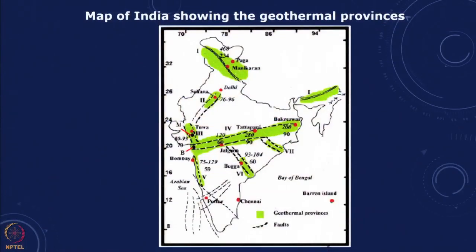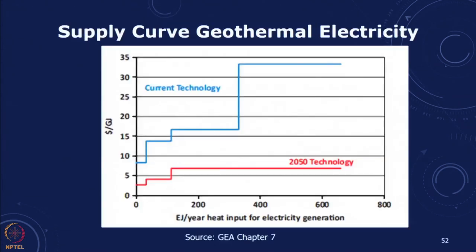In the Indian context, there are geothermal provinces around the fault areas, but temperatures in most cases are relatively low. In some cases, such as Puga Valley, temperatures of 200 degrees Celsius are being recorded and this can be used for power generation — there is a pilot being planned there. In many other places geothermal can be used for cooking and heating, though we do not expect it to have a very major role in the Indian context, but locally it can provide some requirements.